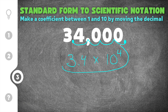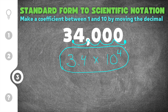So 34,000 in scientific notation is 3.4 times 10 to the fourth. A very common mistake is thinking the number of zeros equals the exponent. The exponent is not equal to the number of zeros — it's equal to the number of times you move the decimal. In this example, we have three zeros, but the exponent is 4, because we moved the decimal four times. Be aware of that as you work on converting numbers to scientific notation.